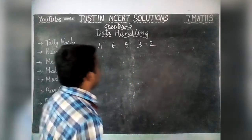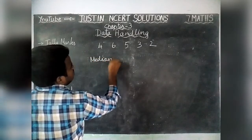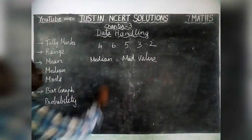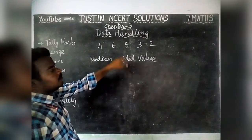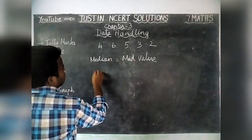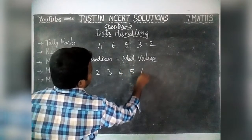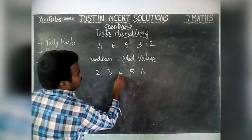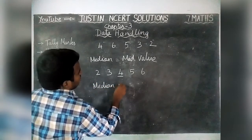Next topic is median. For 5 observations, we are going to find the median. The meaning of median is equal to the mid-value. We have taken observations 2, 3, 4, 5, 6. To find the mid-value, first we arrange in ascending order: 2, 3, 4, 5, 6. The mid-value is 4. So median of the given data is equal to 4.